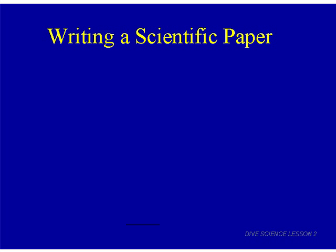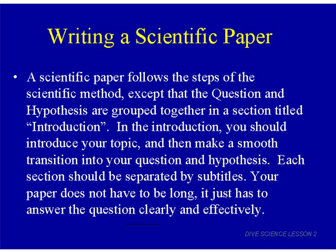Now let's talk about writing a scientific paper. We've talked about the scientific method and its five parts — question, hypothesis, methods, results, and discussion. When writing a scientific paper, or science report, you typically group the question and hypothesis together in a section titled the introduction.